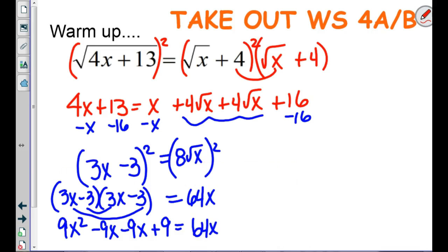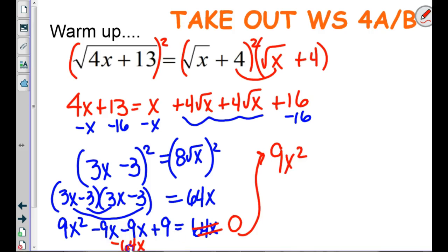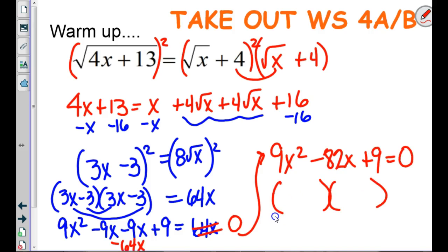We're finally down to something we can deal with. We need to make it equal to zero, so we have 9x squared. Let's see what this all comes out to — negative 9, negative 9, and negative 64. So combining the x terms gives us negative 18x, and that's right.